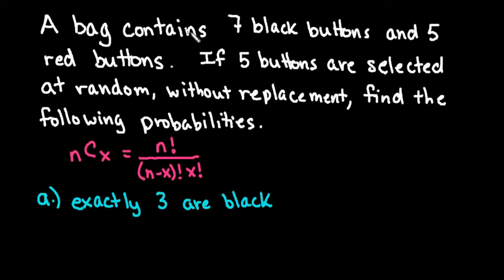So what we have here is a bag that contains seven black buttons and five red buttons. We are selecting a total of five buttons without replacement, so that means we take a button out and keep it out, not putting it back in. Originally we have 12 total buttons because seven plus five equals 12.